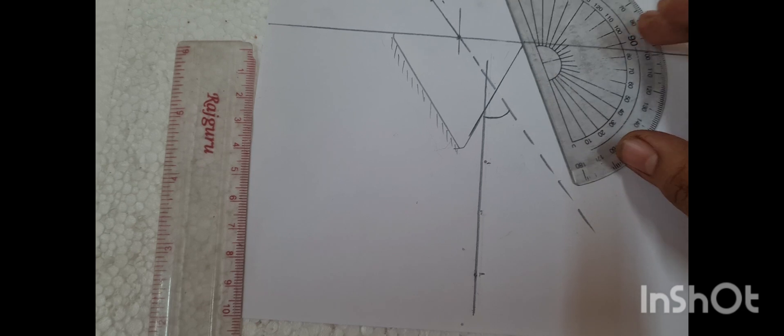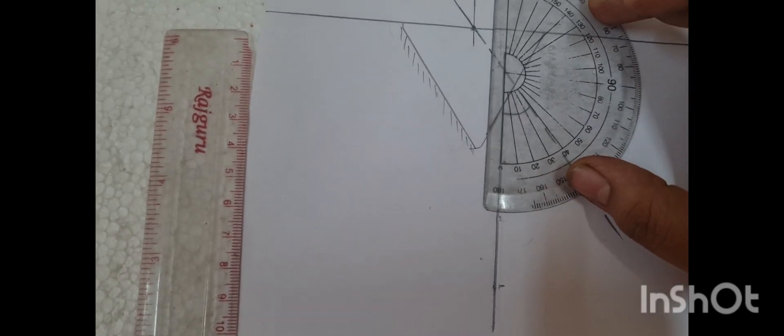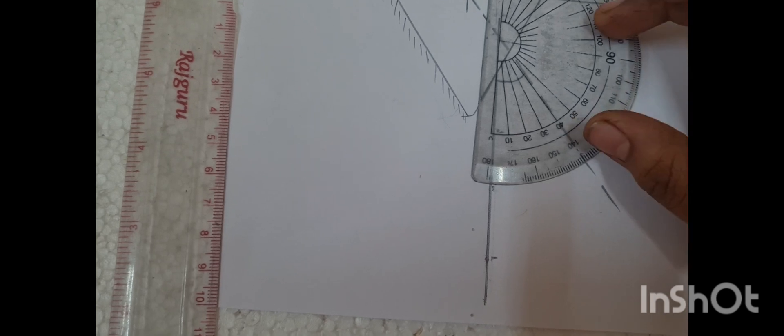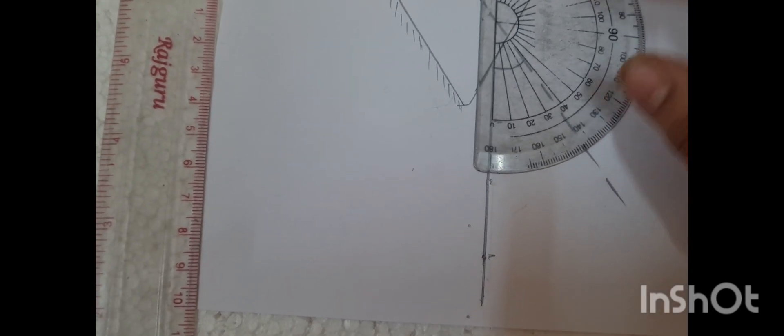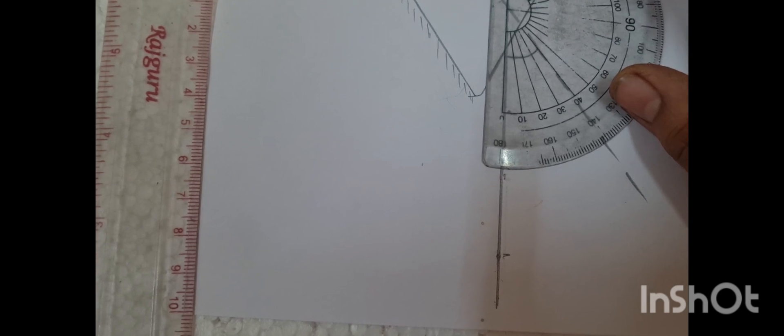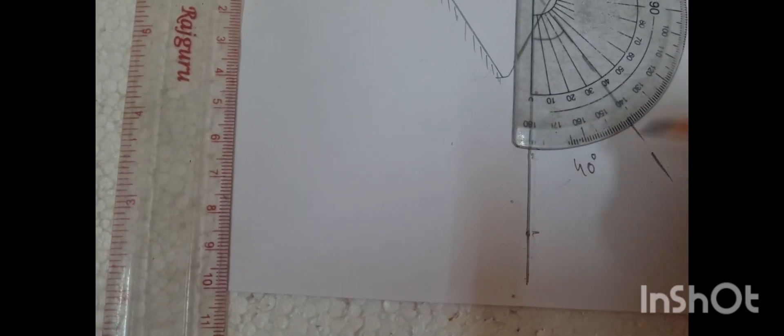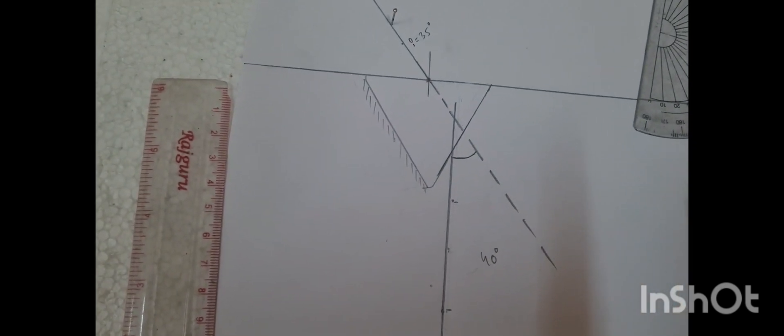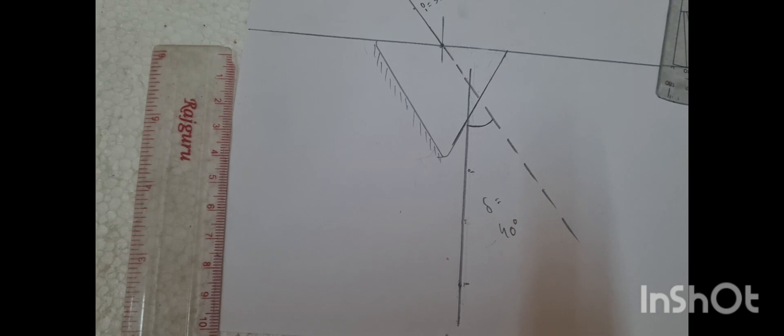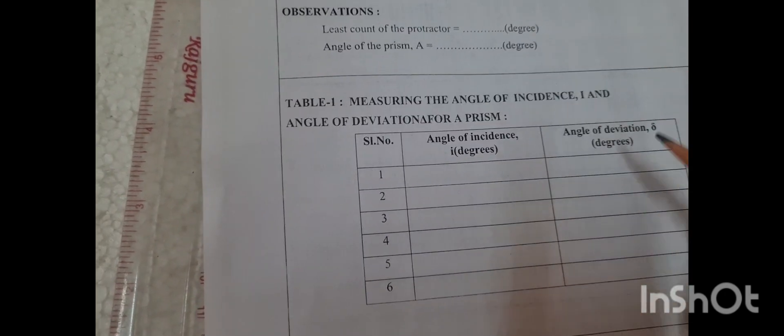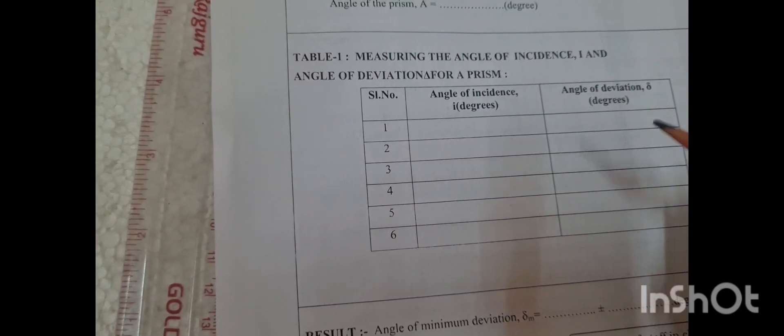With the help of a protractor, measure the angle of deviation. The angle of deviation is 40 degrees. This is for I value incident angle 35 degrees, angle of deviation is 40 degrees. So you have to enter the values: angle of incidence 35 degrees, angle of deviation 40 degrees.